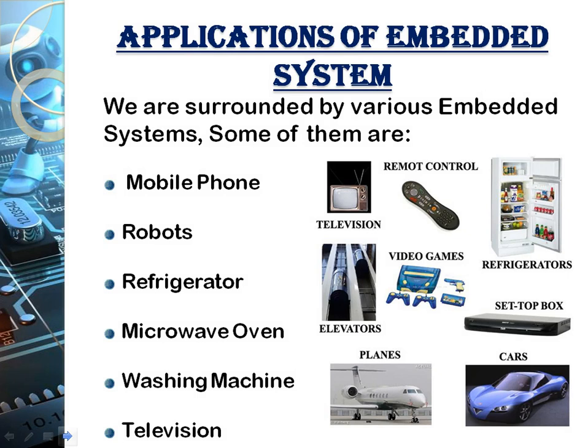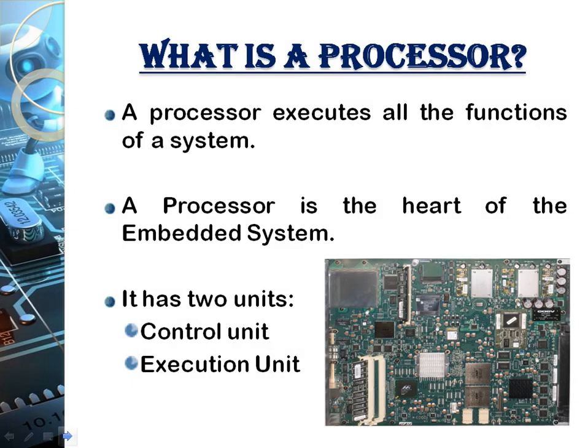These are the applications of an embedded system. A mobile phone is not itself an embedded system, but it is a combination of various embedded systems. Other examples include robots, refrigerators, microwave ovens, washing machines, televisions, and so on.